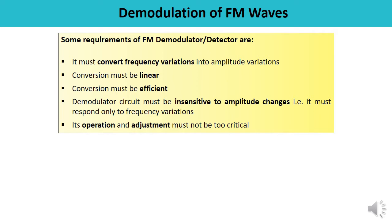There are some special requirements of FM demodulators or detectors. Whenever a demodulator or detector circuit is designed, it must satisfy some mandatory, necessary conditions. First, the FM demodulator must convert frequency variations into amplitude variations, and this conversion must be linear and efficient. The demodulator circuit must be insensitive to amplitude changes — meaning it must respond to frequency variations only and not to any amplitude changes. The operation and adjustment of the circuit must be easy and must not be very critical.